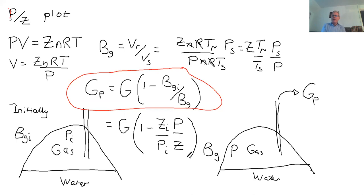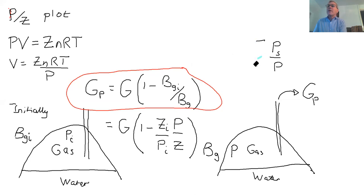When I write the equation here, it's GP = G(1 - BGI/BG). Now, the thing you notice here with the BG factors is there's a temperature here and a surface pressure. They're clearly going to cancel out. The temperature in the reservoir doesn't change when I produce the gas. The rock has a large heat capacity. The only thing that varies is actually pressure and the Z factor. So it is simply a convention that we write this equation in terms of Z factor. And so you get GP = G(1 - (ZI/PI)(P/Z)).